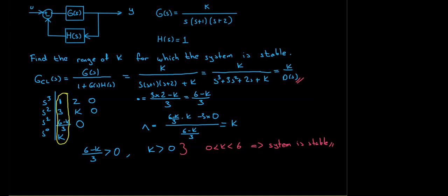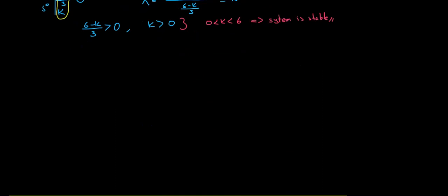Student question: what if there is a zero in the first column of the Routh array? That's exactly the next topic. These are called difficulties in the Routh method, and we do have solutions for them.